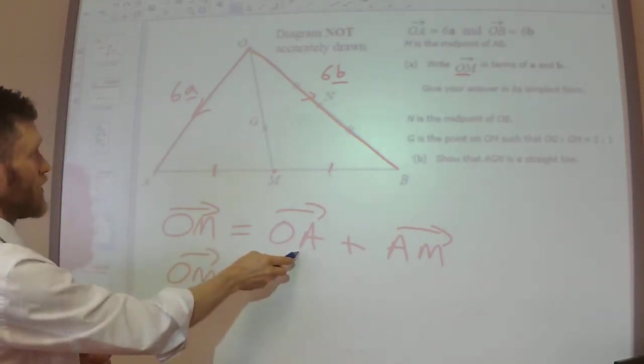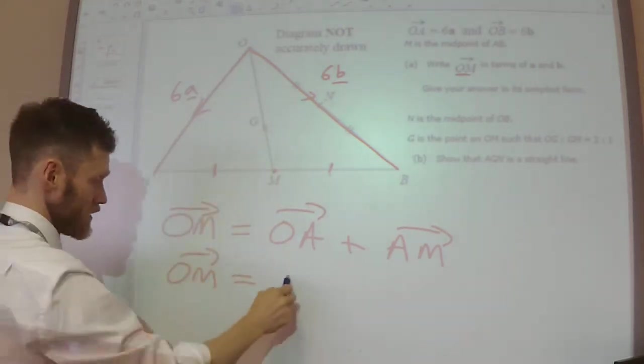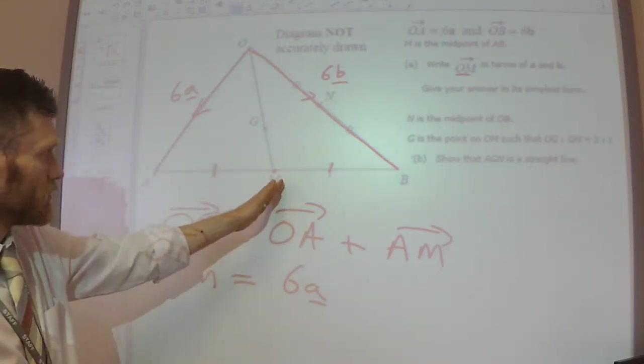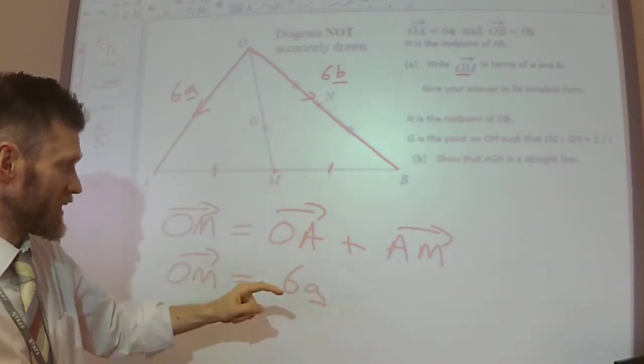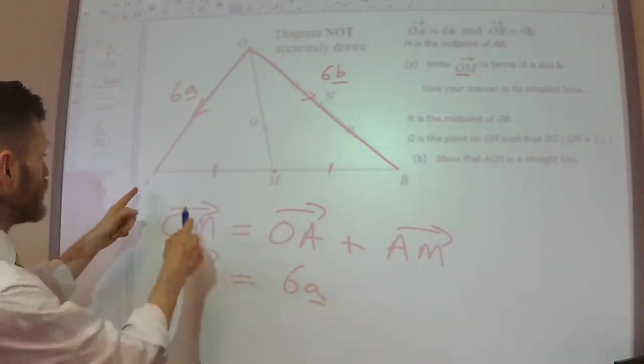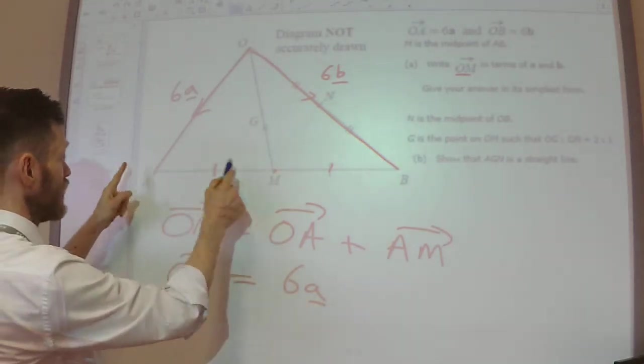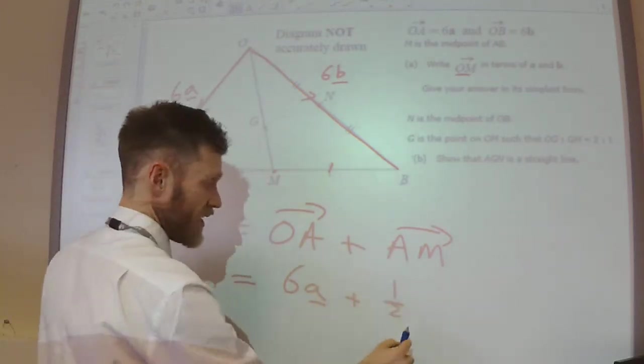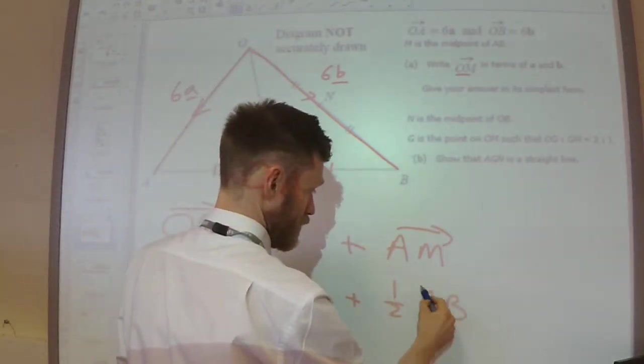O to A, I know what that is easily, it's 6a. A to M, I'm not quite sure what that is yet, but I do know that this is half of A to B. So I could write plus half of A to B.